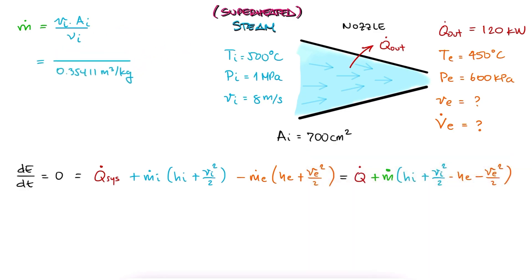With this information and substituting the other values, we can calculate the mass flow rate. And again, this is the mass flow rate coming in and coming out.